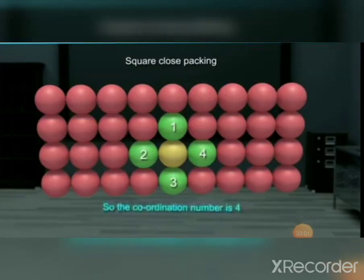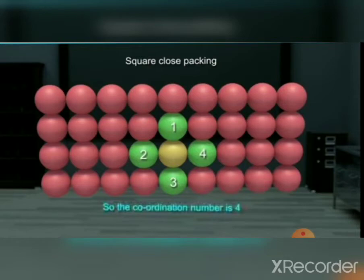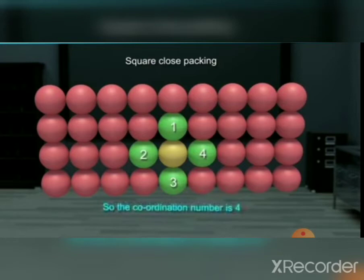Let us now consider close packing in two dimensions. The second row of spheres is placed exactly above the first row, giving both horizontal and vertical alignment. If the first row is named type A, the second row is also type A, giving an AAA type arrangement. Each sphere is in contact with four others, so the coordination number is four. When the centers of these four spheres are joined, we get a square — that is why this is called square close packing in two dimensions.